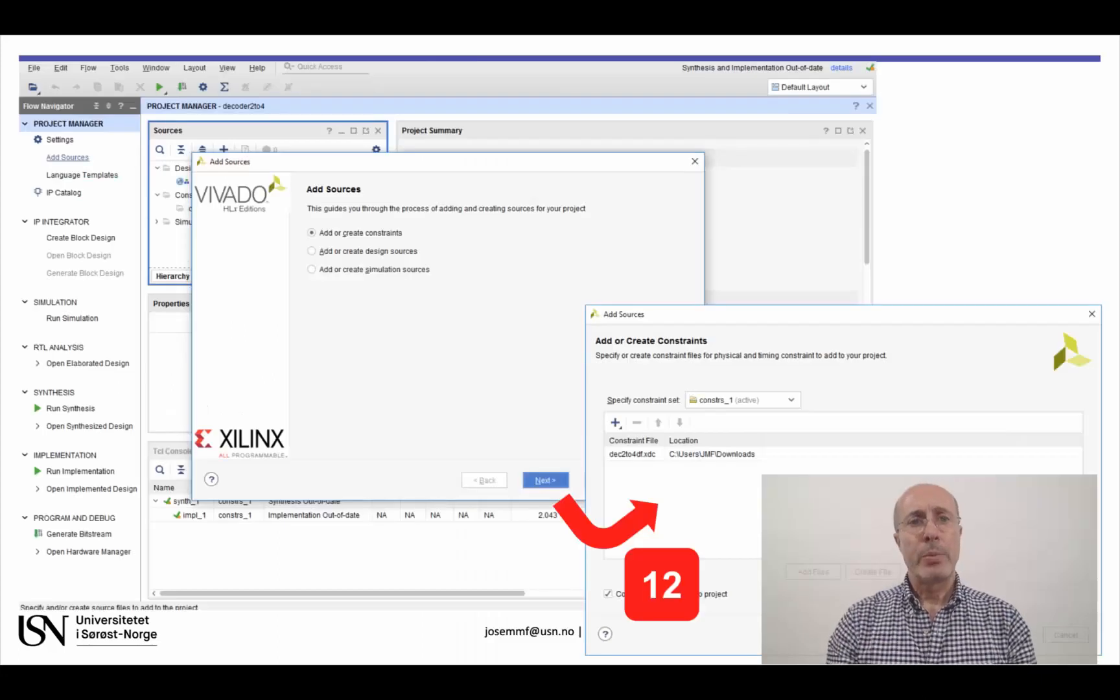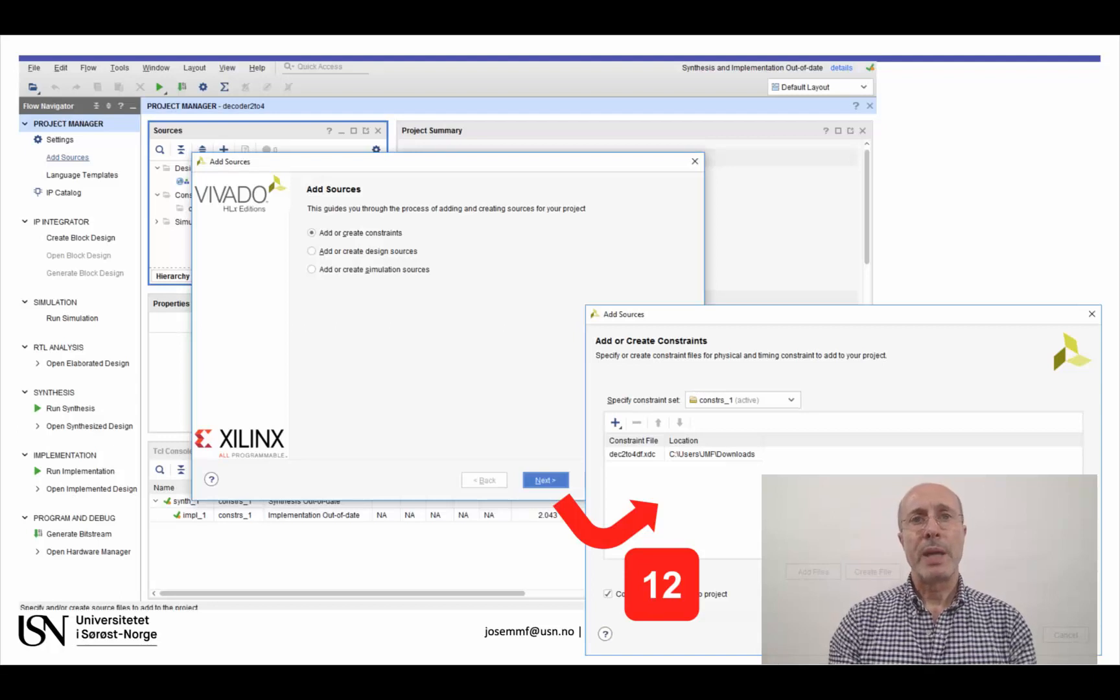Since the file is already available, we will add it to our design as done before, but in this case selecting the option Add or Create Constraints. Click on Finish when the file has been selected.